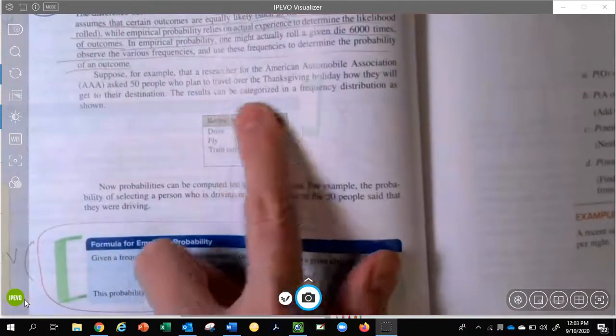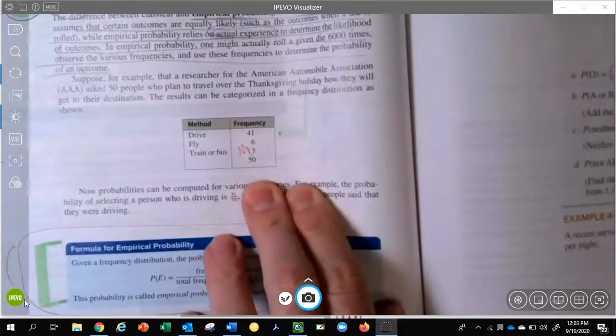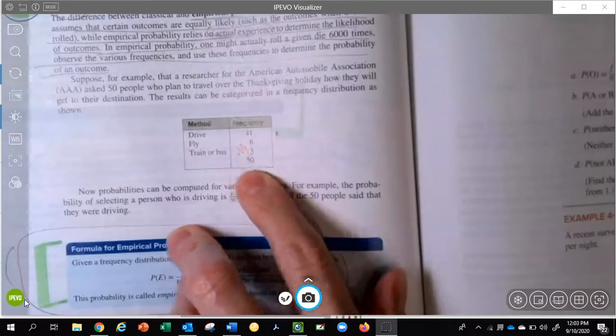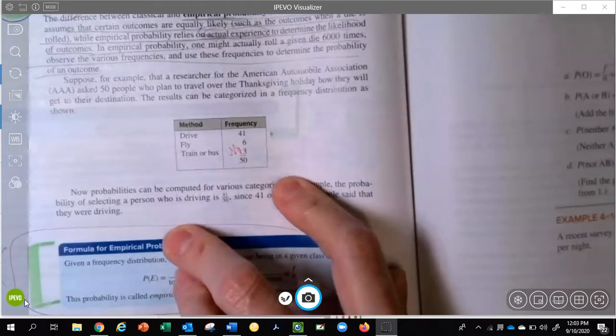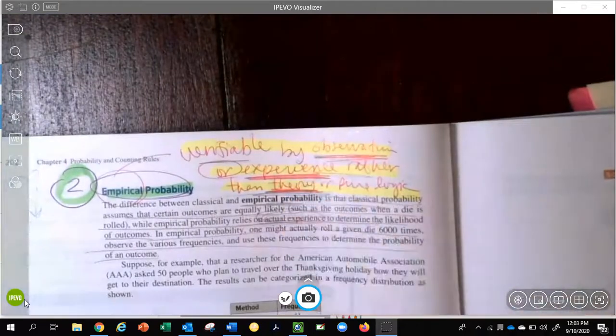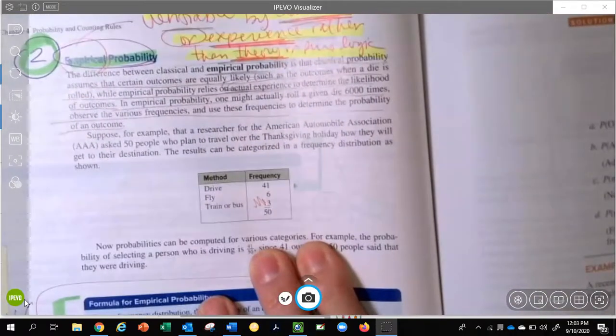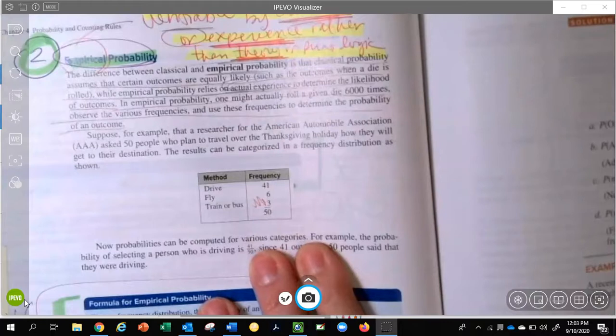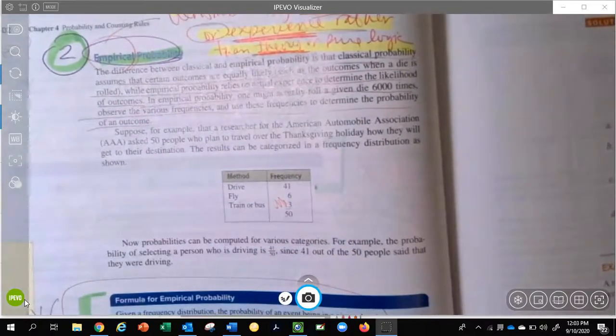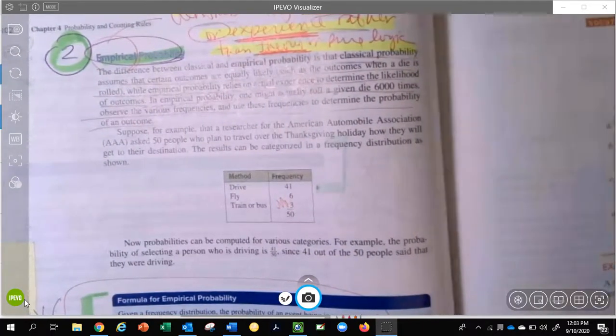And you had different examples, like this one right here, was just talking about experience and collecting some data about how many people are driving, flying, or taking a bus. And again, that is based on observation or experience, and not just, well, I know if I flip a coin or roll a die, there are two different classifications of probability.